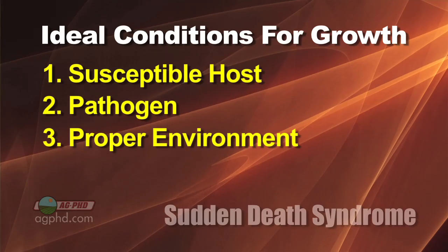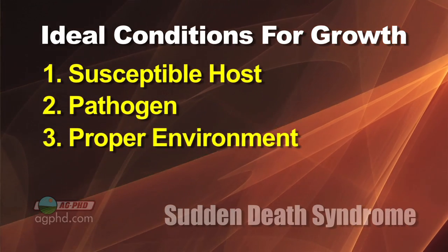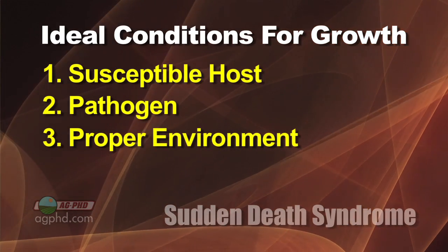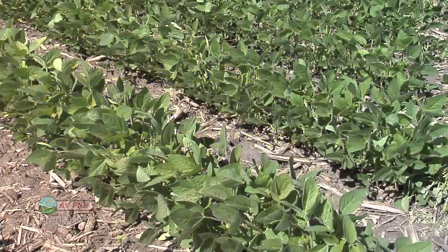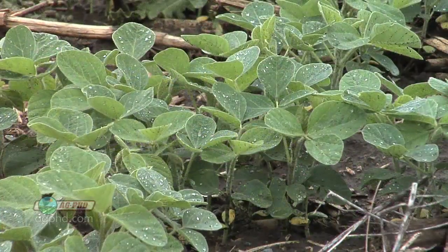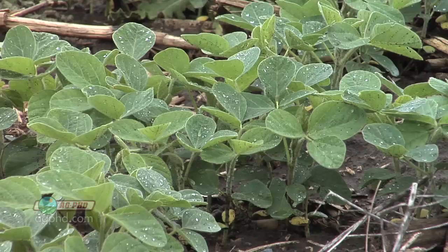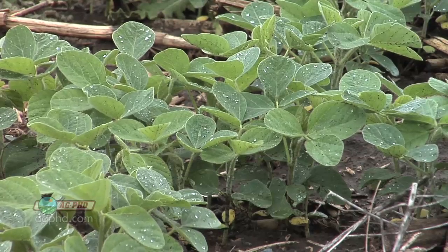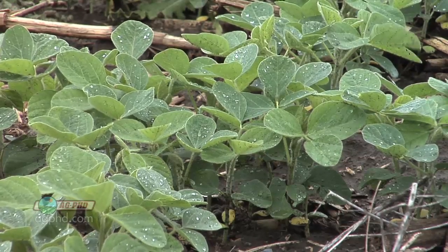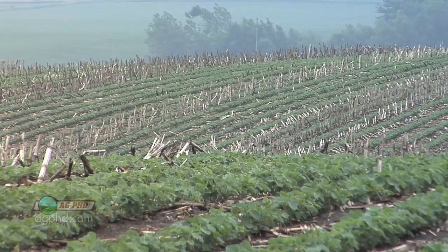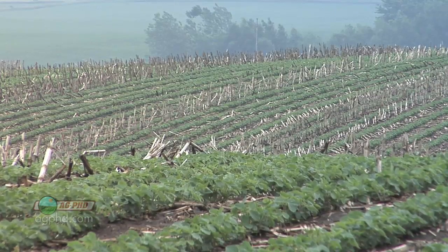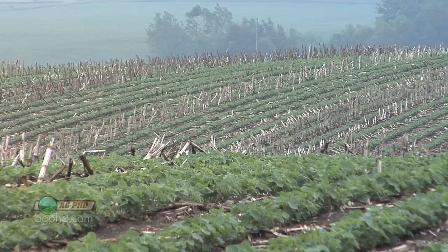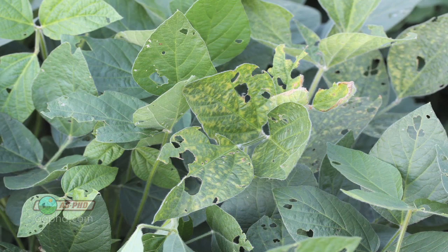And then finally, you need to have the right environment, and this is why I say we had the perfect storm this year. We've had a little bit of sudden death syndrome — some areas have had more than others — but it's been out there. We're still planting susceptible hosts, and this year we got exactly the right environment: plentiful rainfall, and we didn't have extremely high temperatures through the summer. We had warm temperatures with wet conditions starting early in the season. It was just a bad deal for sudden death syndrome.